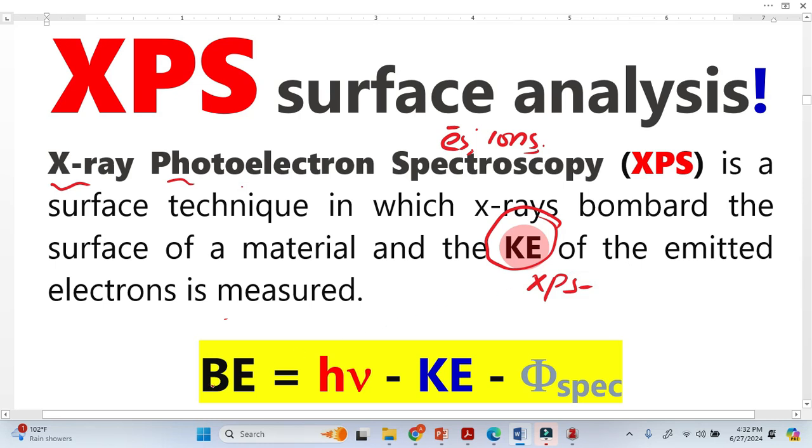This is the X-ray photon energy, which is known. This is the work function of the spectrometer, which has a constant value. So once we have this in our hand, we can easily calculate the binding energy.